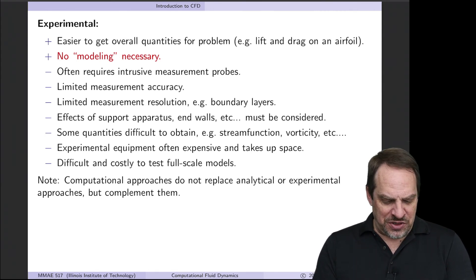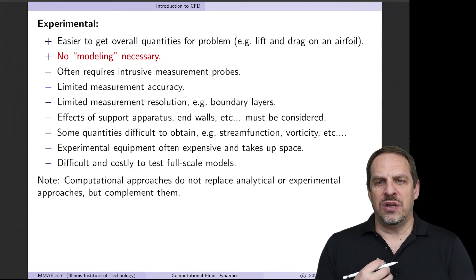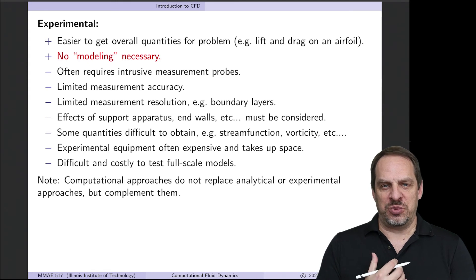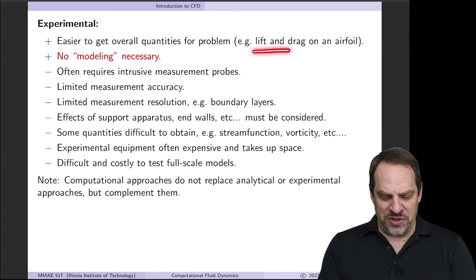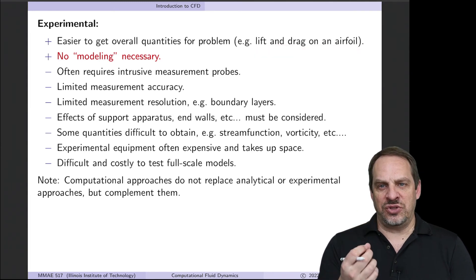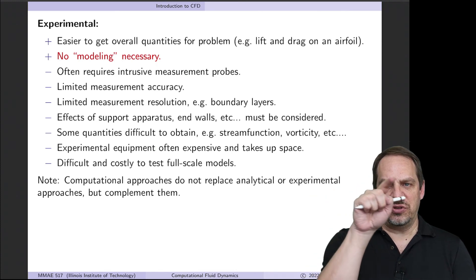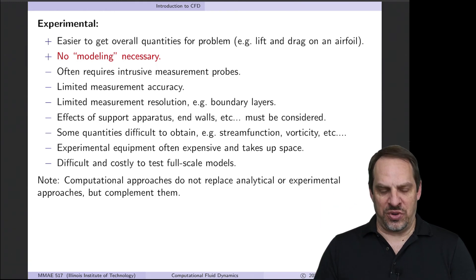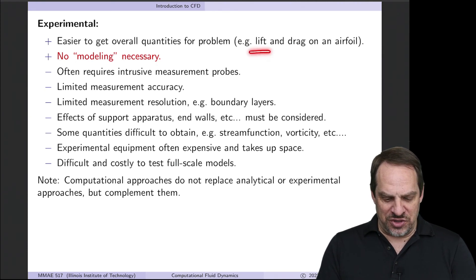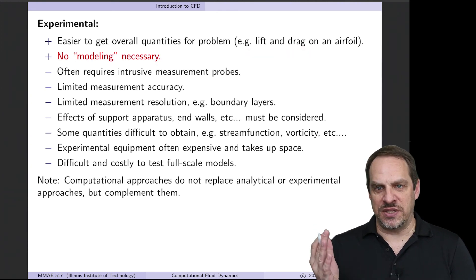One of the advantages of the experimental approach is that certain quantities that you want to be able to obtain are actually far easier to get experimentally than they would be analytically or computationally. So I give here the example of lift and drag on an airfoil. And to get those from a computational solution, I would have to take the pressures and the wall shear stresses at every point on the airfoil, integrate them, and then get the lift and drag components. In an experimental context, I simply go get a force balance, and I directly measure the lift and the drag. It's that simple.